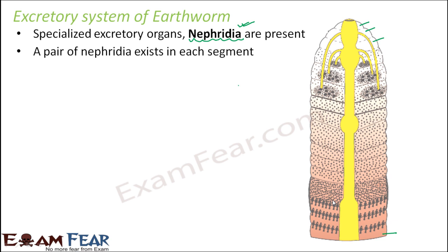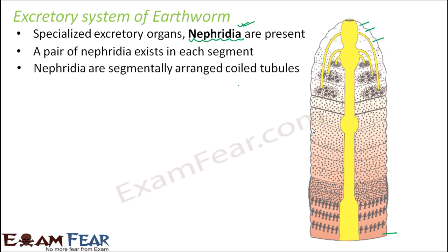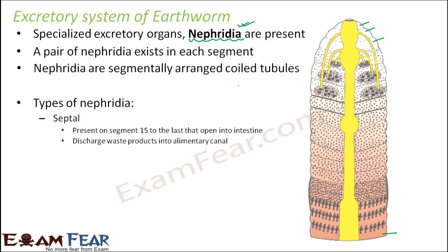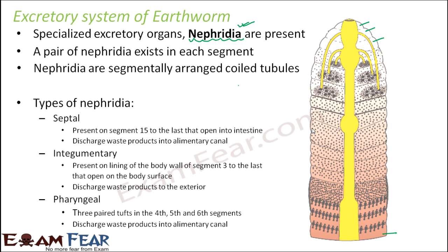There are many different types of nephridia present, as evident from this picture. Somewhere you see small dots, somewhere they are very close to each other, somewhere they are little tall and elongated. So there are many varieties of nephridia; however, their function is almost the same. Nephridia are segmentally arranged coiled tubules. There are three types of nephridia: septal nephridia, integumentary nephridia, and pharyngeal nephridia.